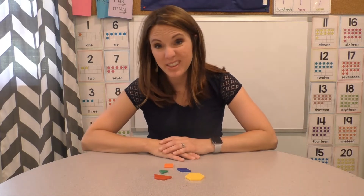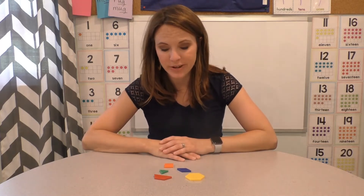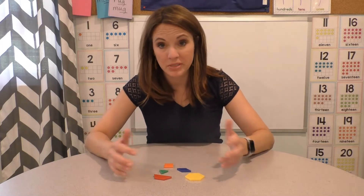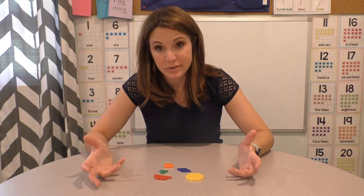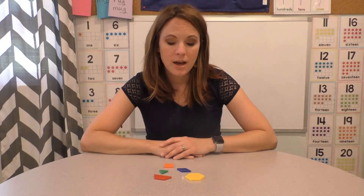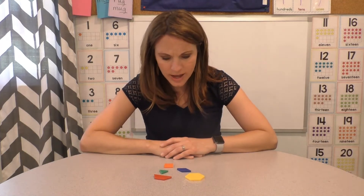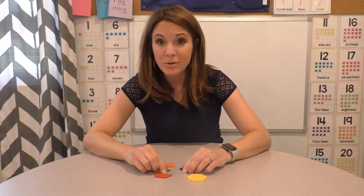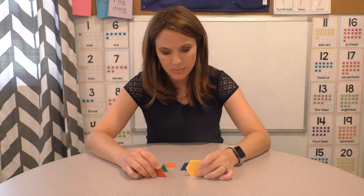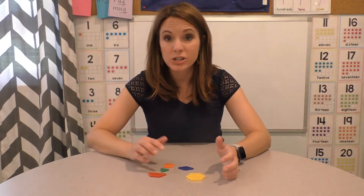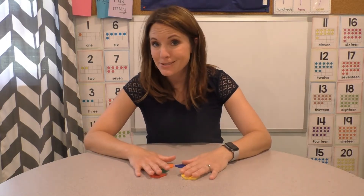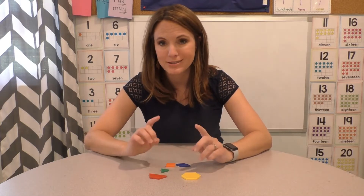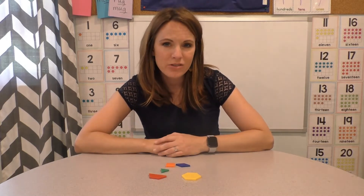Now that you've sorted them, I want to look at my shapes and think about how they're the same and how they're different. I notice they're all a different color, so I could put them into five different groups. I also notice they're all flat — they all lay on the table. I can stack them up a little bit, but they might fall over because they're not that stable. That's because these are called flat shapes, or plane shapes.